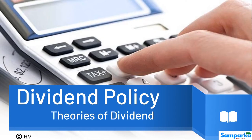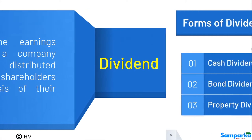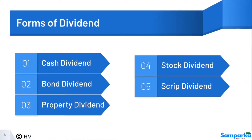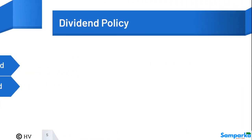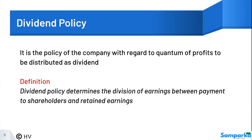Let's discuss the topic on dividend policy. Part of the earnings and profit of a company which is distributed among the shareholders on the basis of their holding is known as dividend. It is the policy of the company with regard to the quantum of profits to be distributed as dividend. Dividend policy determines the division of earnings between payment to shareholders and retained earnings. — Weston and Brigham